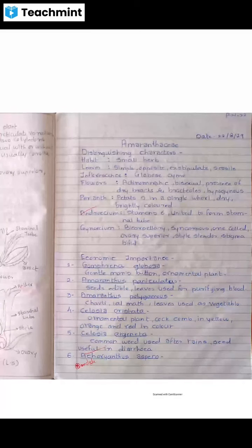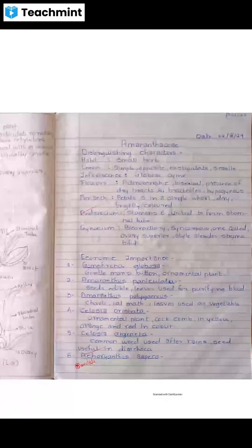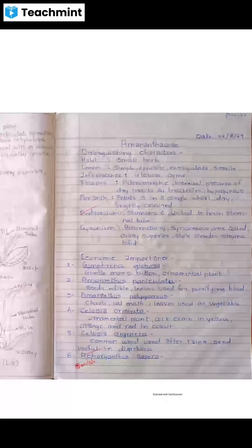Gynoecium: bicarpellary, syncarpous, one-celled ovary superior. Style slender, stigma bifid — divided into two equal lobes, same as in the Asteraceae family. Fruit: capsule and utricle.